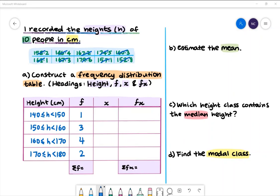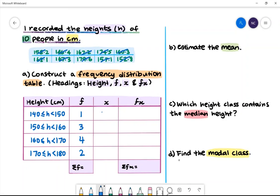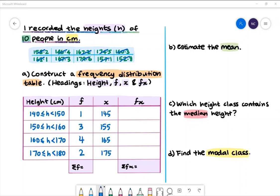In the next column, x represents the midpoint of each class. The midpoint of the first class is 145. The next is 155, 165 and 175. To complete the fx column, we need to multiply the frequencies with the midpoint.